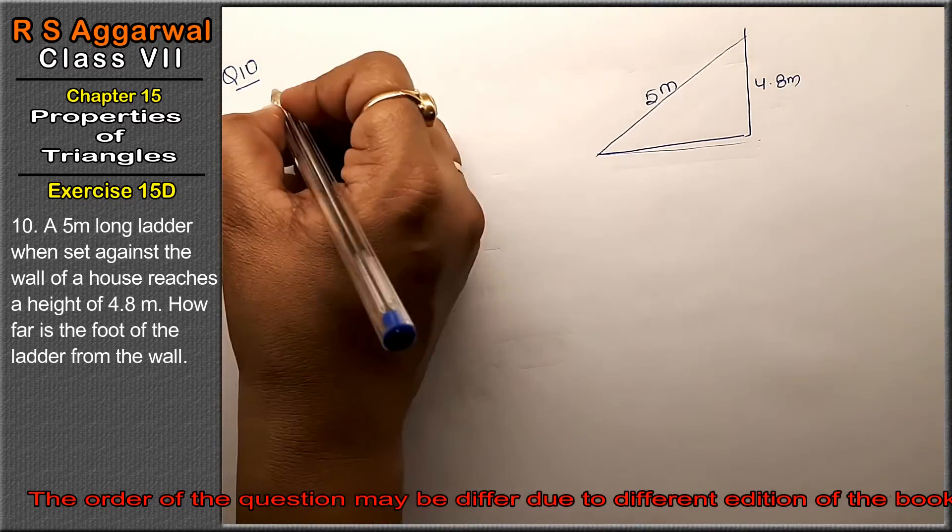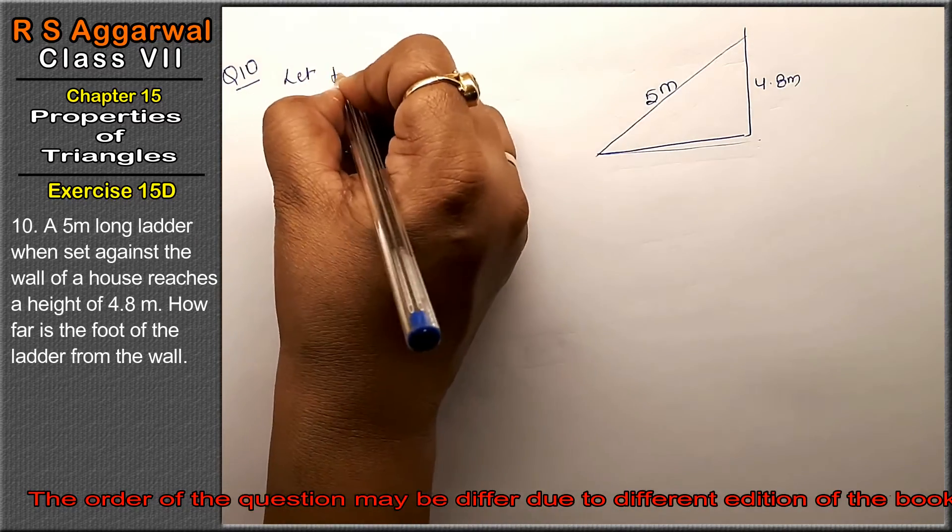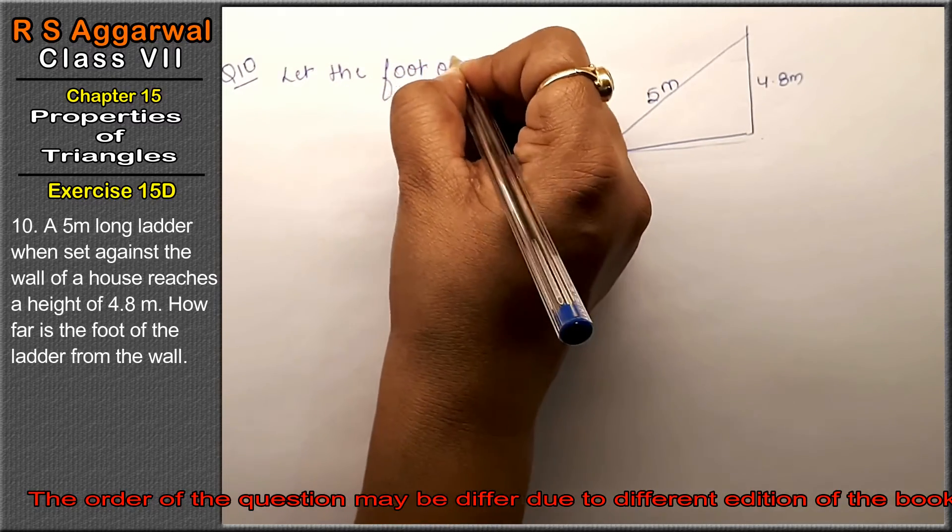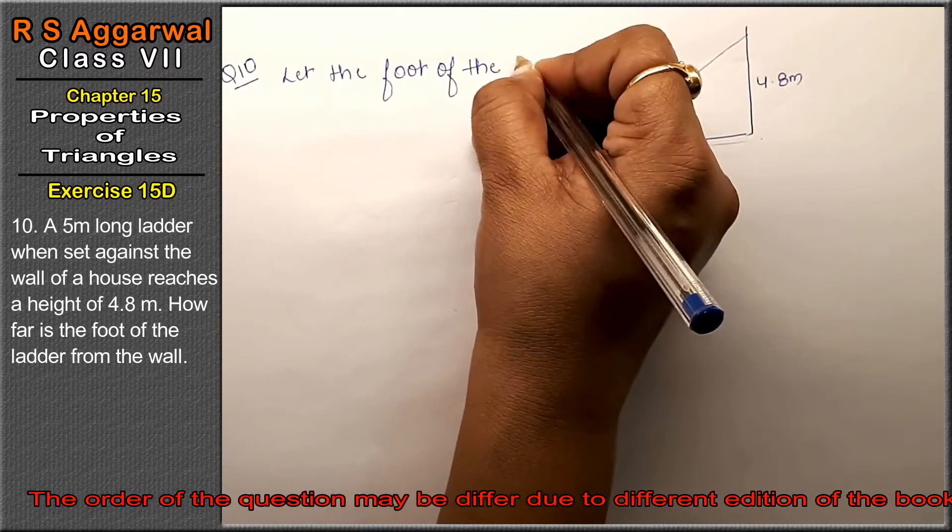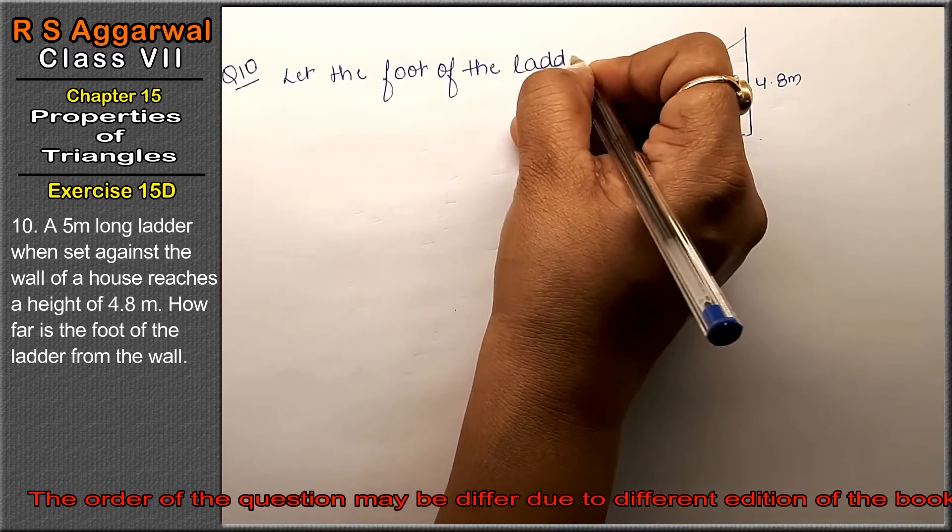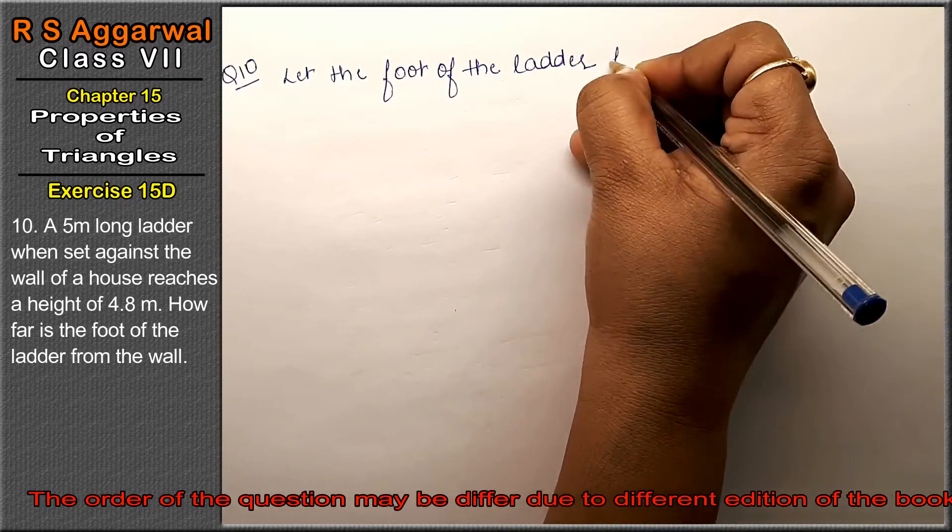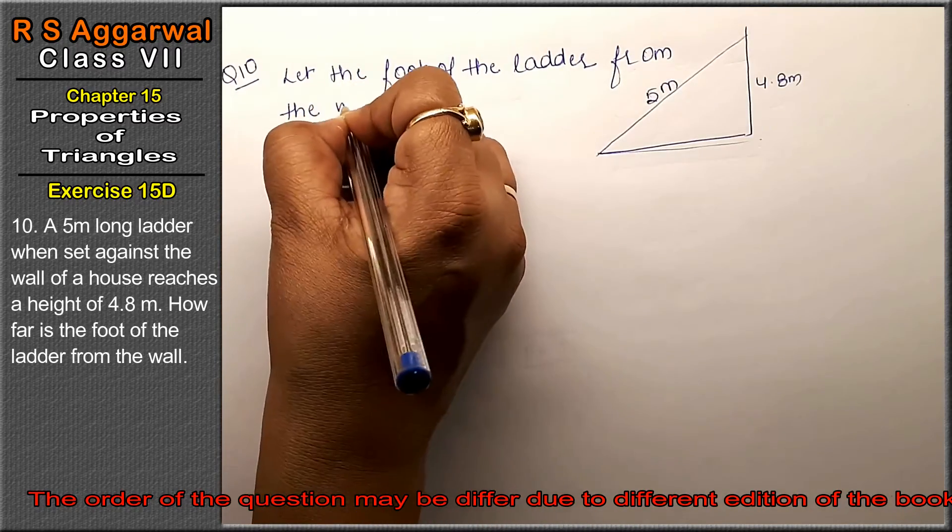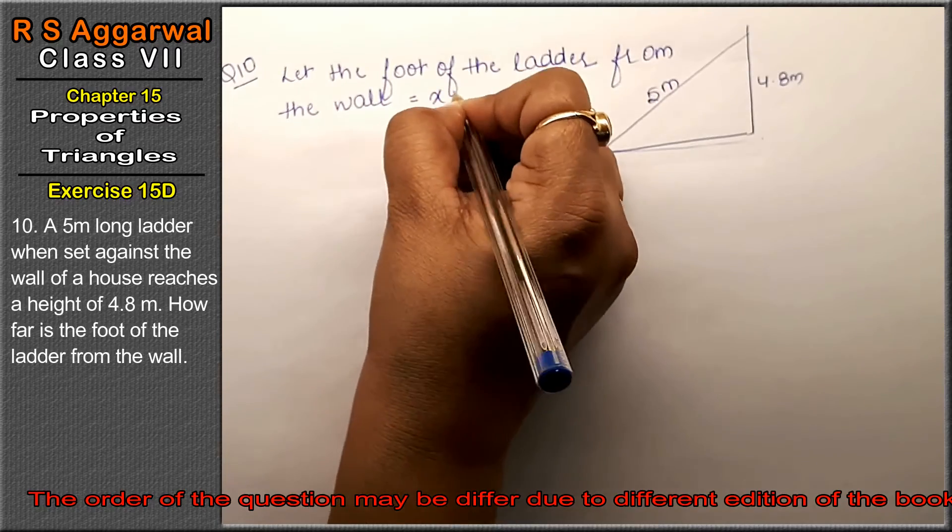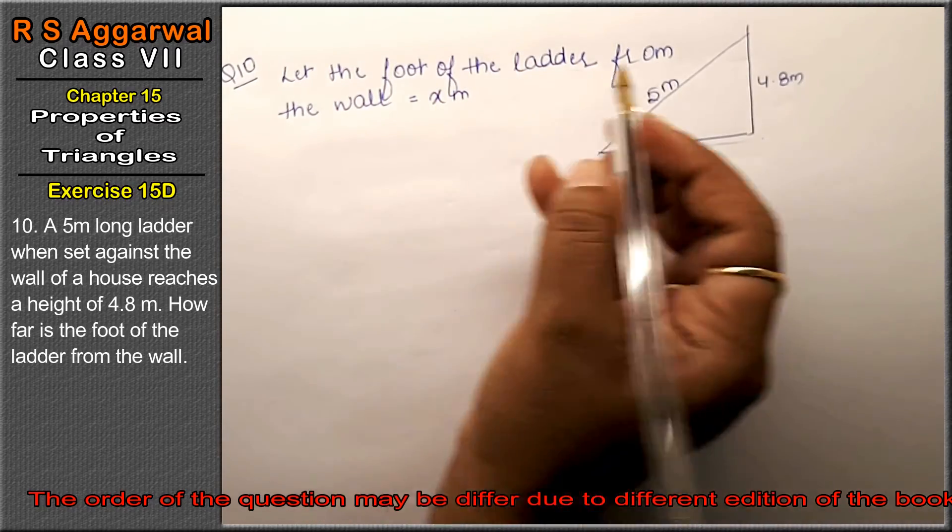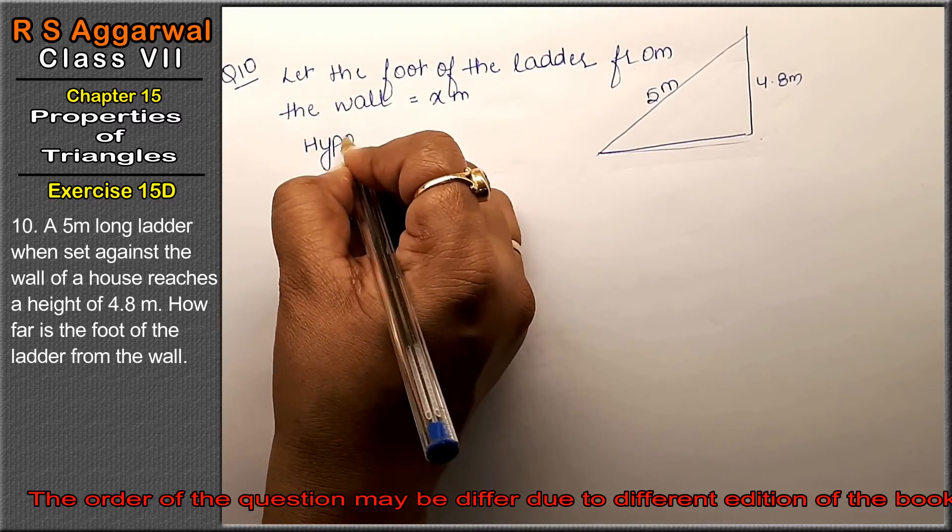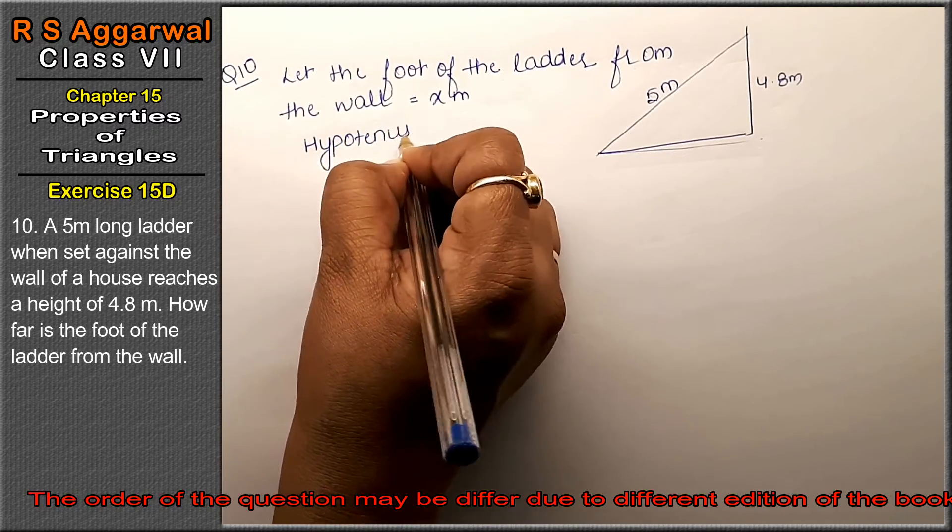Let the foot of the ladder from the wall be x meters. So the ladder is the hypotenuse.